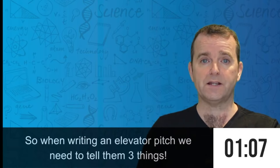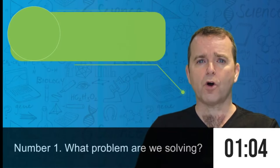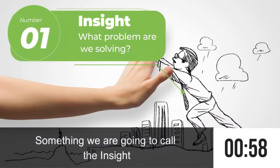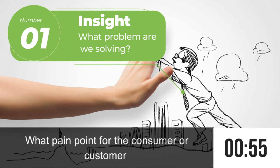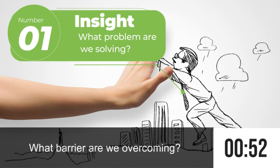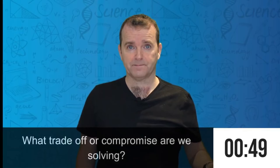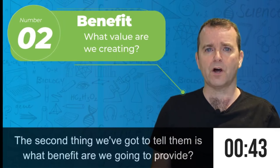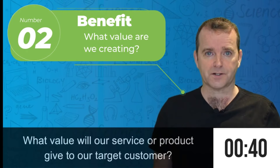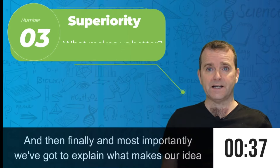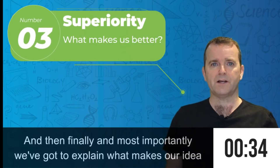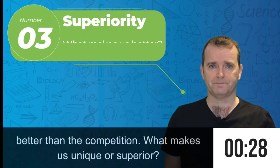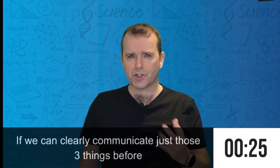When writing an elevator pitch, we need to tell them three things. Number one: what problem are we solving — something we're going to call the insight. What pain point for the consumer or customer, what barrier are we overcoming, what trade-off or compromise are we solving? Number two: what benefit we're going to provide — what value will our service or product give to our target customer? And then finally and most importantly, what makes our idea better than the competition — what makes us unique or superior.